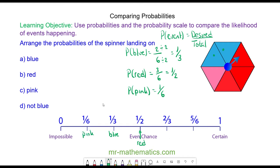And finally, the probability of not blue. There are one, two, three, four sections which are not blue. That is four out of six, which can be simplified to make two thirds. So this would be not blue.